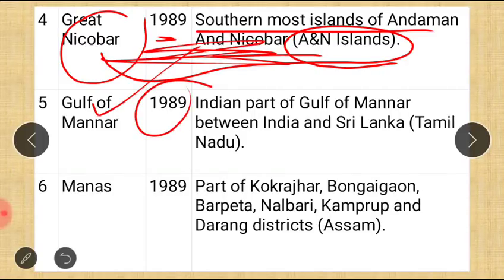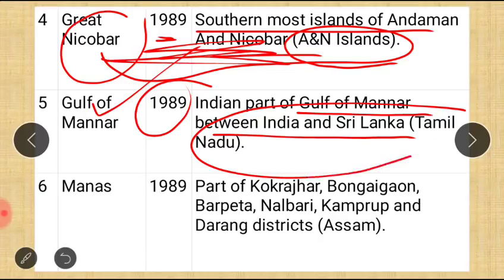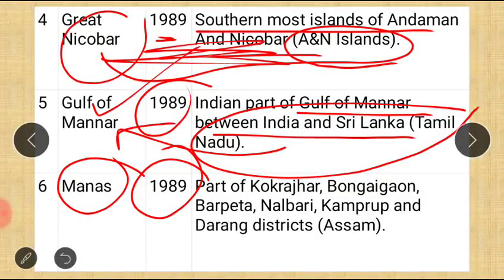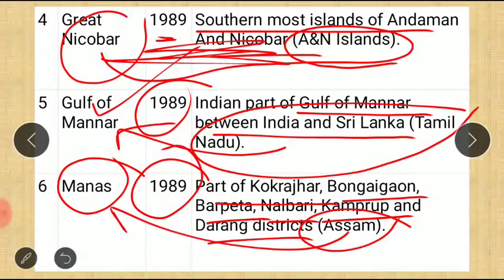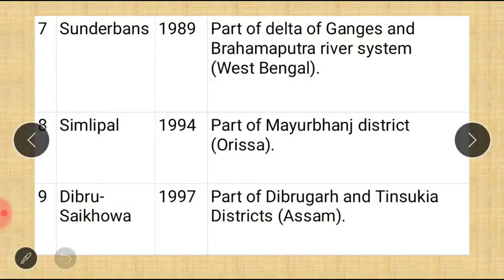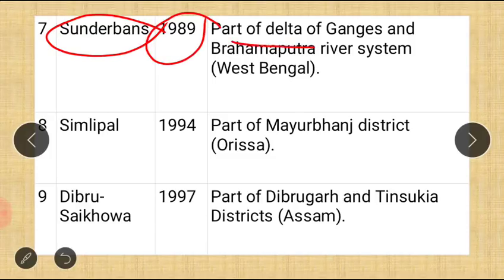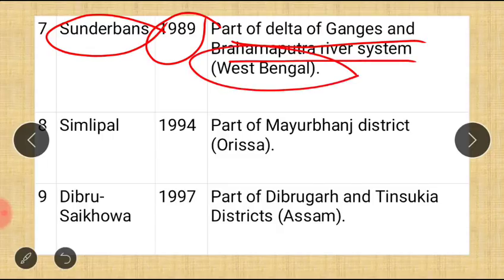The sixth is Manas, 1989, part of Kokrajhar, Bongaigaon, Barpeta, Nalbari, Kamrup, and Darrang Districts of Assam — Manas is in Assam, and there is a National Park here too. The seventh is Sundarbans, 1989, part of the delta of the Ganga and Brahmaputra river system in West Bengal — the Sundarbans is the largest delta in the world and spans West Bengal and Bangladesh. The eighth is Simlipal, 1994, part of Mayurbhanj District of Odisha.